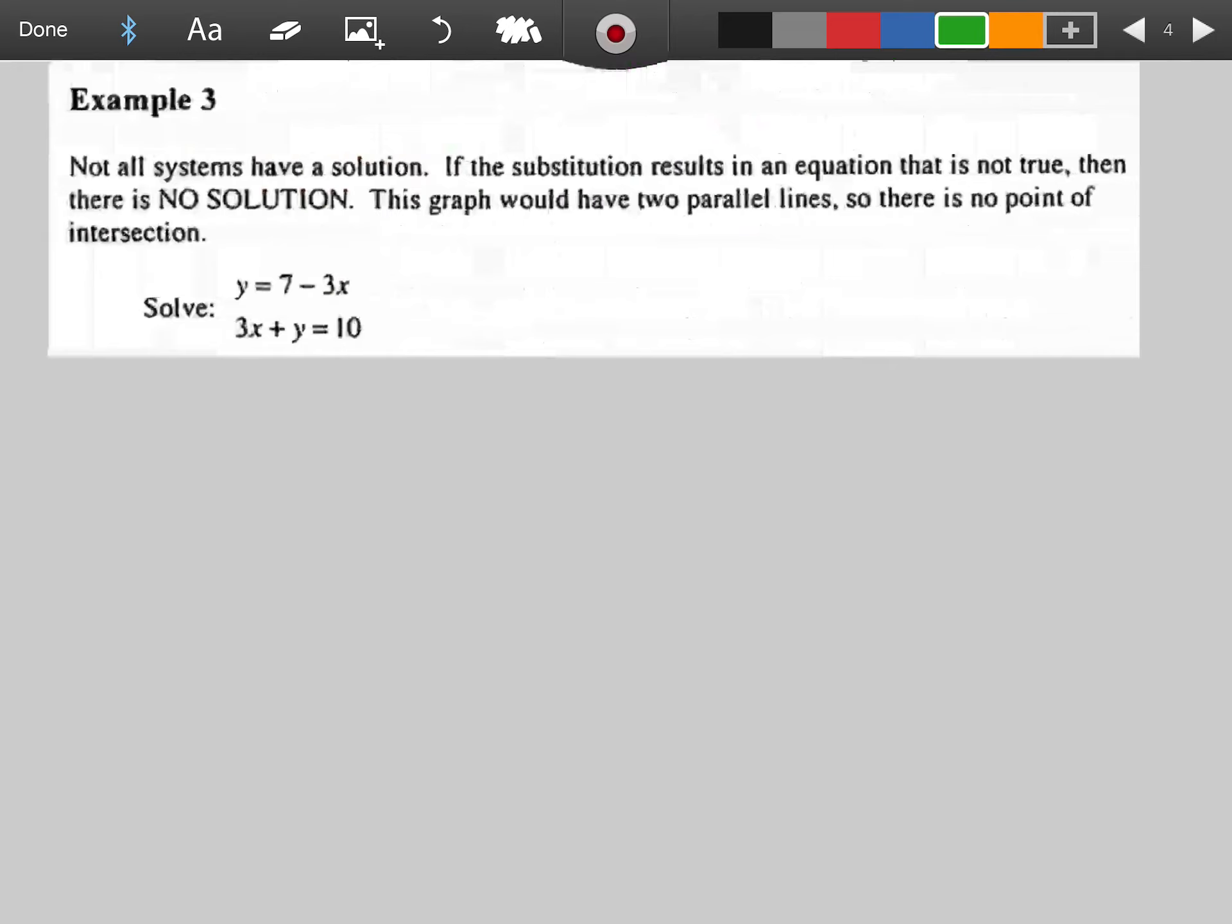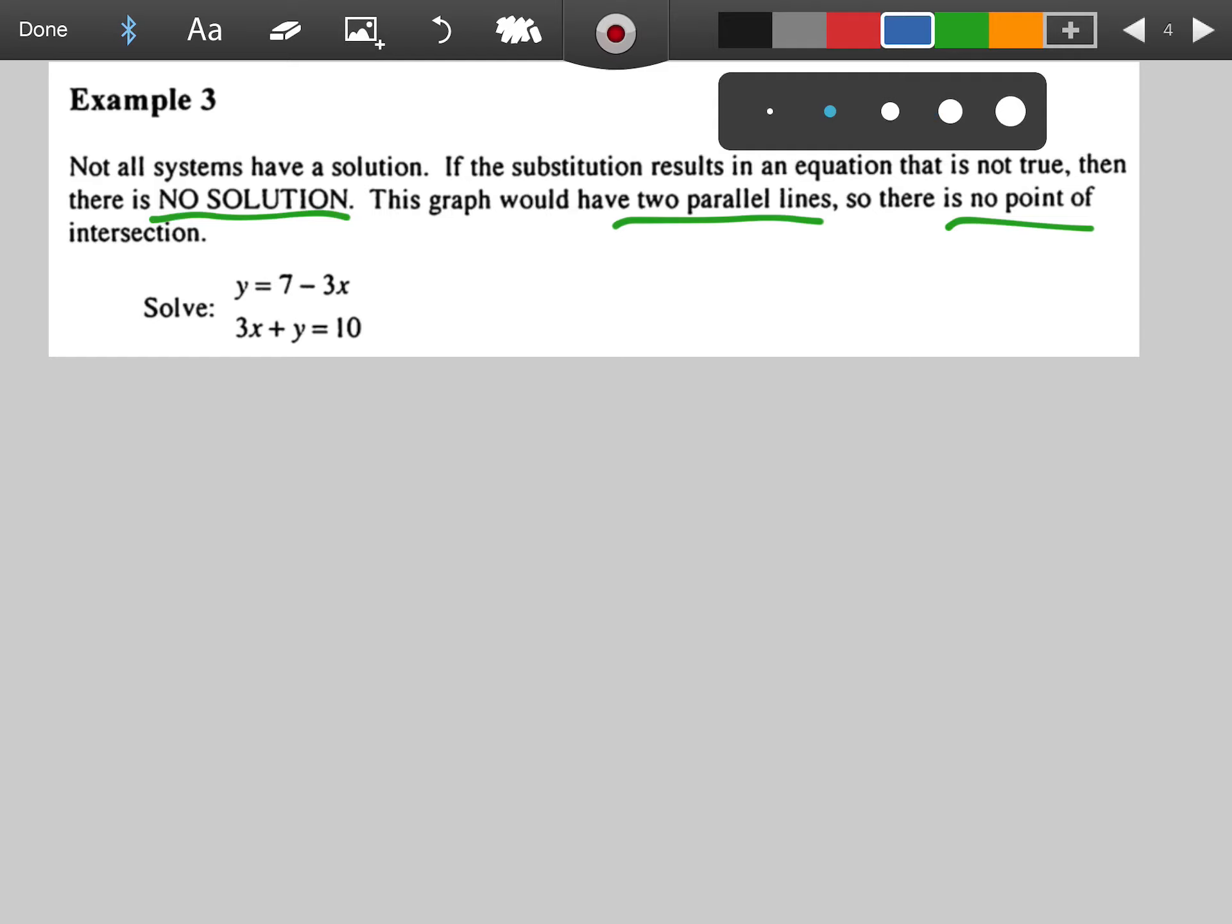Occasionally, we'll come across a situation where there is no solution, where we're dealing with two parallel lines that these were graphed out. So in that case, they don't intersect. We'll still process through this the same way we did with the other problems. Which variable is already isolated from these two equations? Hopefully you're saying y is isolated here. And so since y is isolated, we can take that into the second equation.